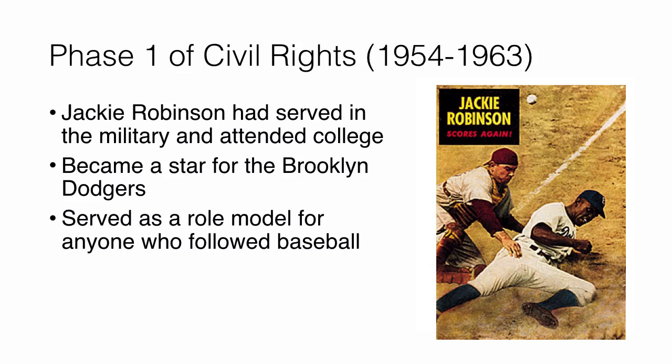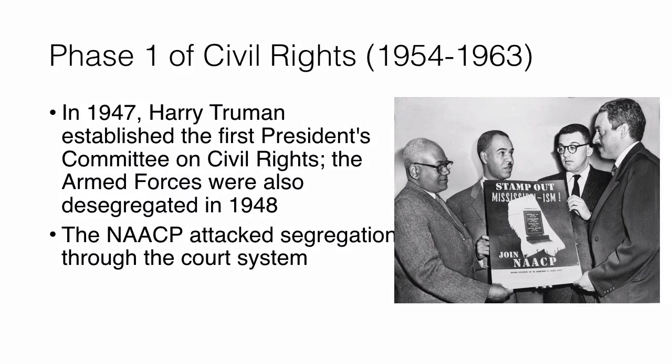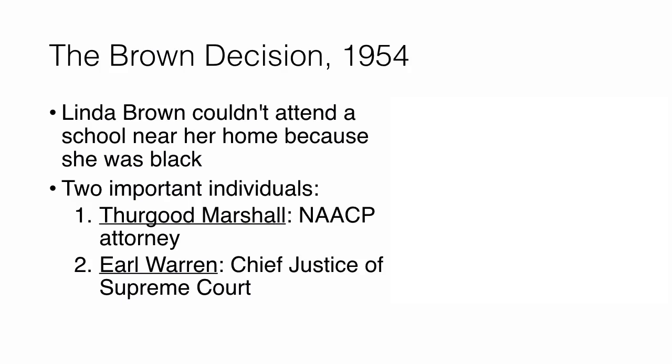Jackie Robinson had also served in the military, gone to college, and became a star for the Brooklyn Dodgers, serving as a role model for African Americans. By 1947, Harry Truman established the President's Committee on Civil Rights and desegregated the armed forces in 1948, against the backlash of Republicans in Congress. The NAACP attacked segregation through the court systems and got a major win in 1954 with Brown v. Board of Education of Topeka, Kansas.